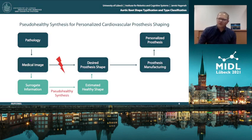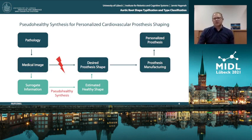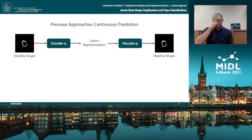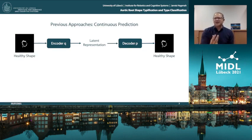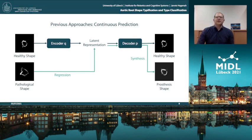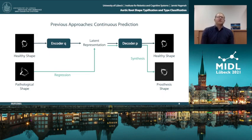In recent years, several methods have been published for pseudo-healthy synthesis in the context of personalized prosthesis shaping. All of them feature a continuous prediction model, which means the prosthesis shape is drawn from a continuum of shapes. One example is to encode all the healthy shapes from the dataset into a latent representation using a variational autoencoder, such that the latent representation forms a shape space where each point corresponds to one prosthesis shape. For inference, given a pathological sample, we estimate the individually optimal prosthesis shape by mapping to the point in latent space that corresponds to the optimum — which is a regression problem. Using the decoder, we can then synthesize an image of this prosthesis shape.